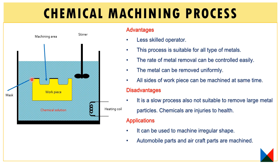All sides of the workpiece can be machined at the same time — when all sides are in contact with the chemical solution, all sides are machined uniformly simultaneously. The main disadvantage of the chemical machining process is that it is a very slow process and is not suitable for removing large amounts of metal. Also, the chemicals used are injurious to health.